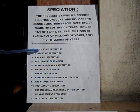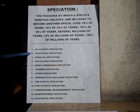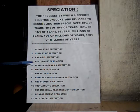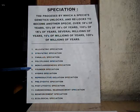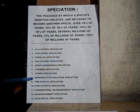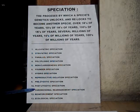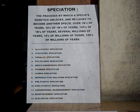Allopatric speciation, sympatric speciation, parallel speciation, polyploidic speciation, non-cladogenesis speciation, founder speciation, hybrid speciation, reproductive isolation speciation, prezygotic speciation, post-zygotic speciation, chromosomal rearrangement speciation, reinforcement speciation, and ecological speciation.